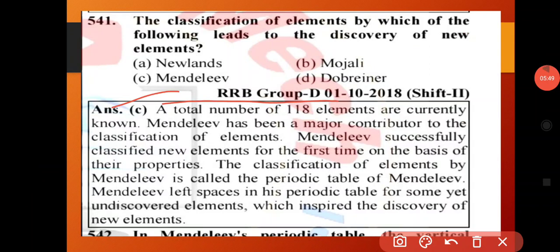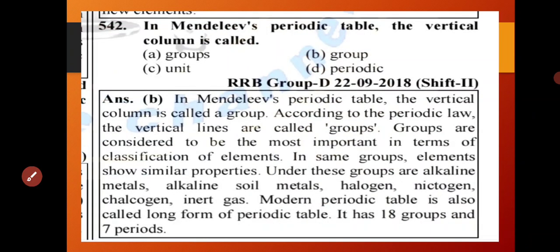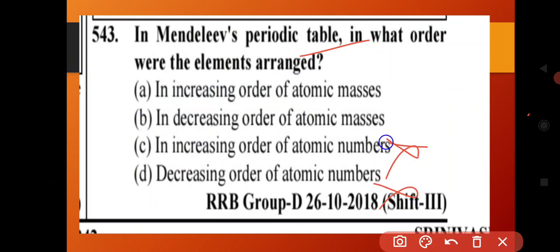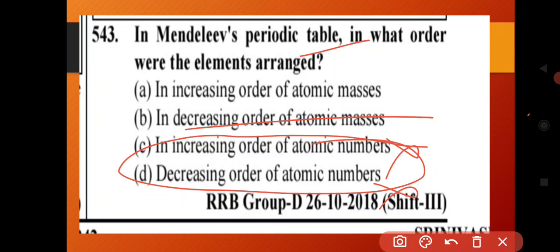In Mendeleev's periodic table, the maximum number of elements known was 63. The vertical columns are groups. In Mendeleev's periodic table, the elements were arranged in increasing order of atomic mass.